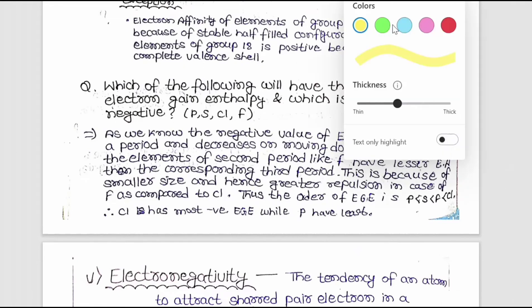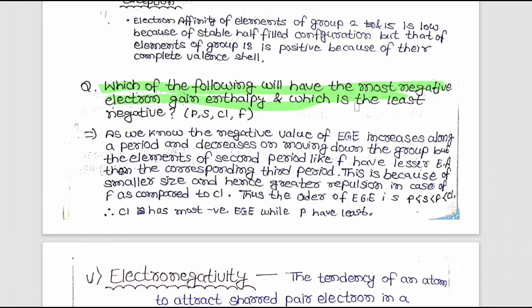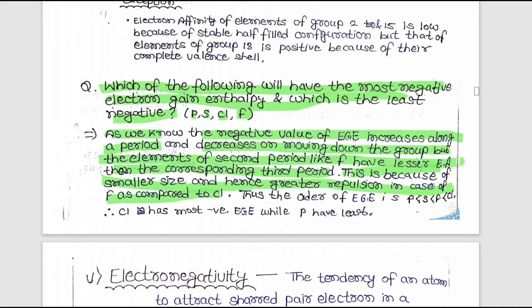Which of the following will have the most negative electron gain enthalpy and which the least negative: phosphorus, sulfur, chlorine, and fluorine? The negative value of electron gain enthalpy increases along a period and decreases moving down the group. However, second-period elements like fluorine have lesser electron affinity than corresponding third-period elements due to smaller size and greater electron repulsion. Thus the order is: P < S < F < Cl. Chlorine has the most negative electron gain enthalpy while phosphorus has the least.